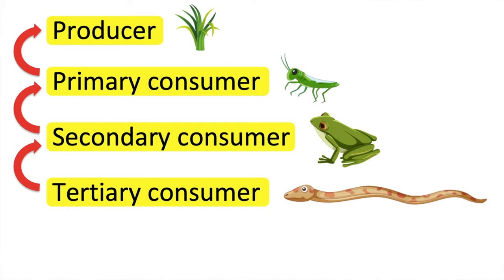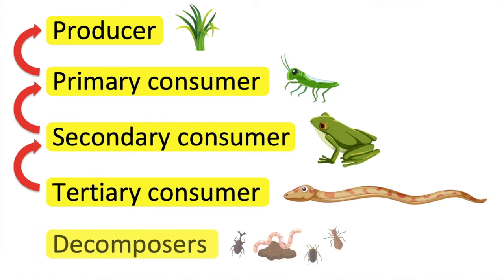When all living things die, decomposers feed on them. Examples of decomposers are bacteria, fungi, beetles, etc.